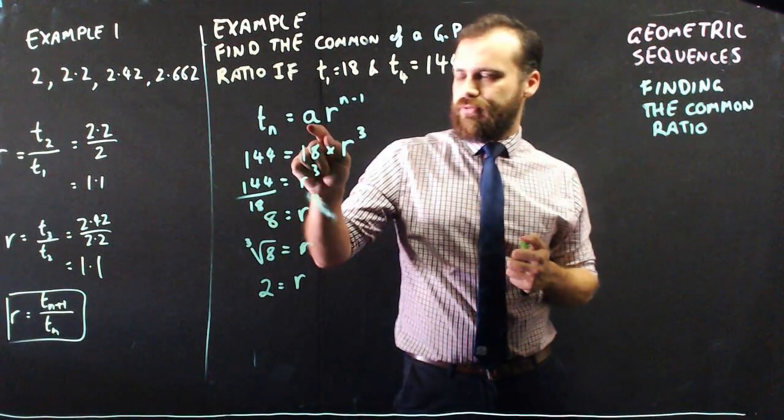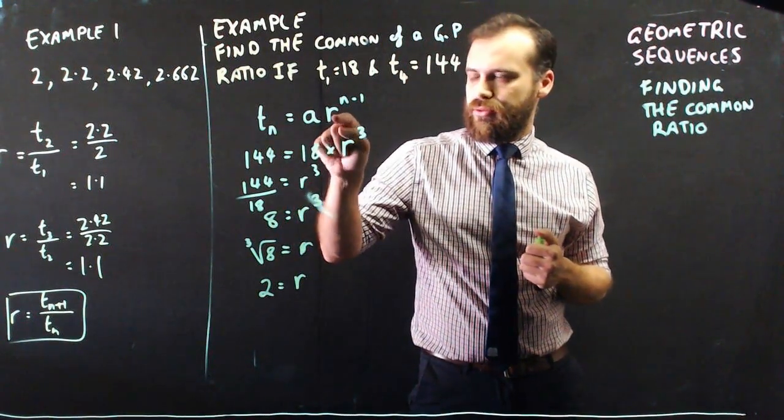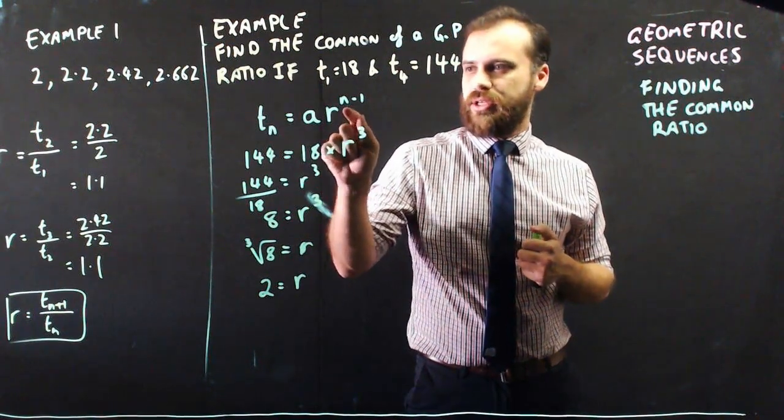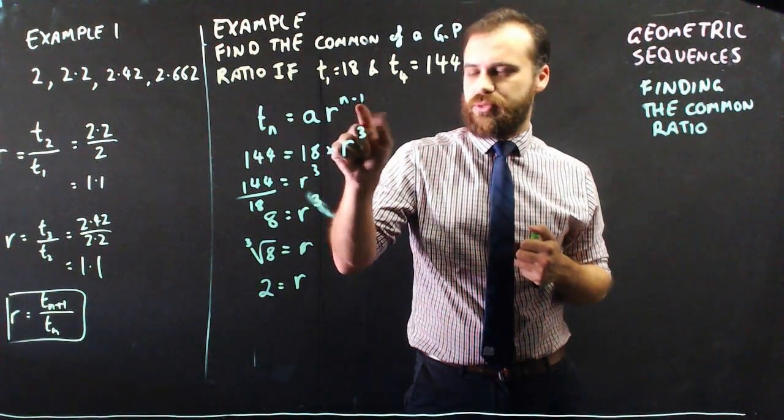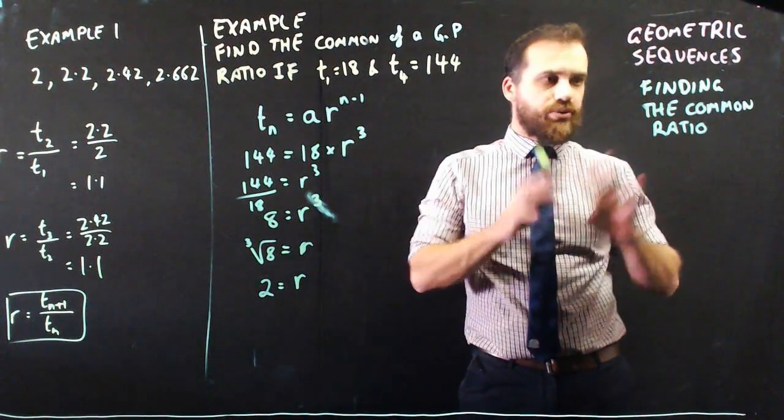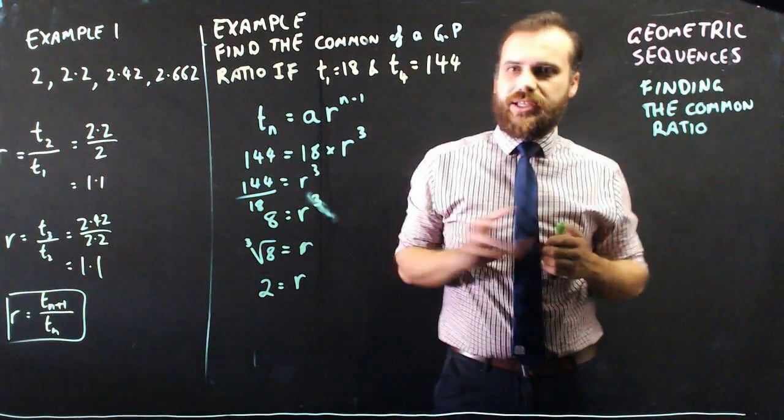Alright, so I knew the first term, I knew the fourth term, and I know that I need to raise the common ratio to n minus 1. The fourth term was 4, so that's n minus 1, which is 3. Okay, two ways to find the common ratio. This one's fairly straightforward. This one takes a little bit of thinking.